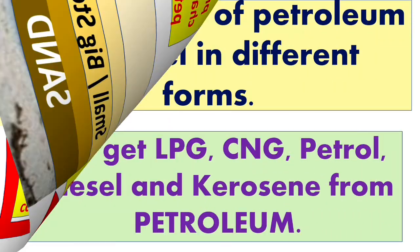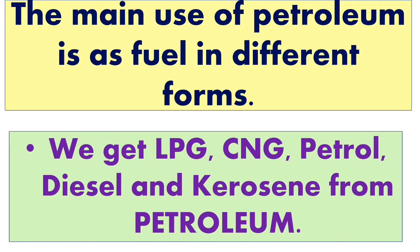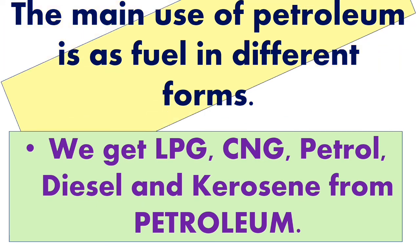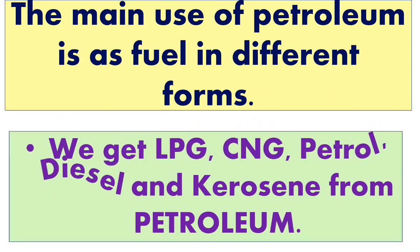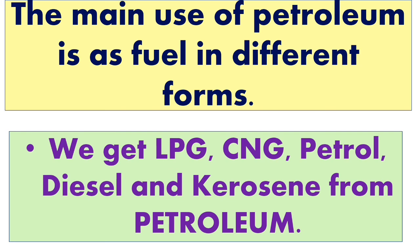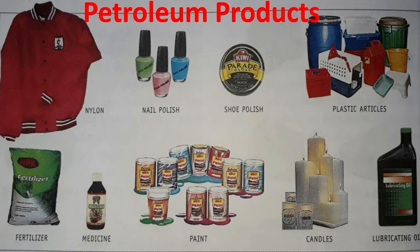The main use of petroleum is as fuel in different forms. From petroleum we get LPG, CNG, petrol, diesel, and kerosene. Petroleum also produces many products such as nylon, fertilizer, nail polish, medicines, shoe polish, paint, plastic articles, candles, and lubricating oil.